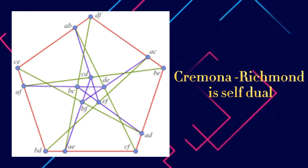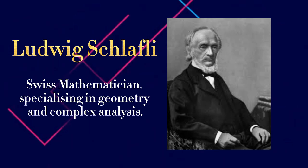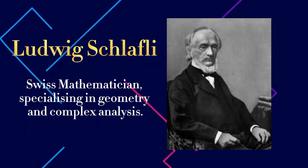The last configuration that we will discuss is Reye's double six, which was introduced by Ludwig Reye, a Swiss mathematician specializing in geometry and complex analysis. The Reye double six is a configuration of 30 points and 12 lines.